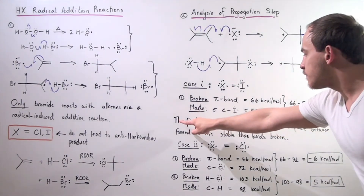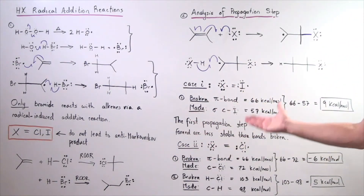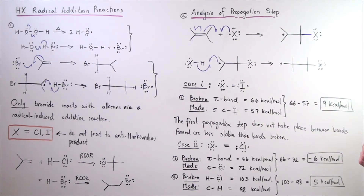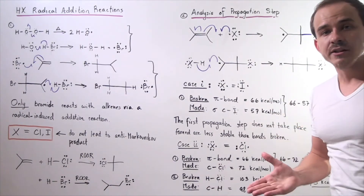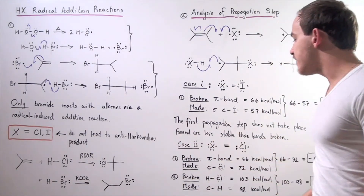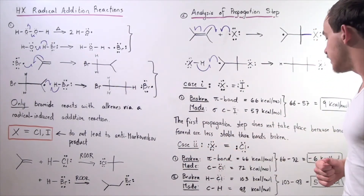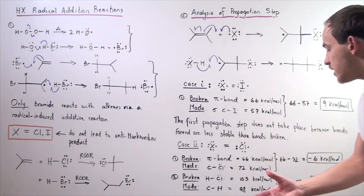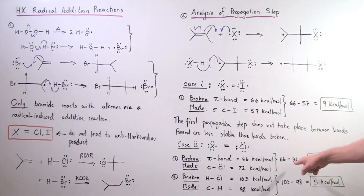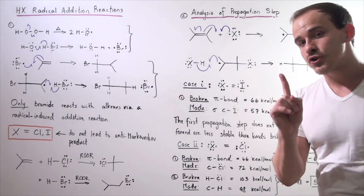In case two, X is chloride. In step one, we again have the pi bond broken at 66 kcal/mol input, and the carbon-chloride bond formed releasing 72 kcal/mol. So 66 minus 72 gives us negative 6 kcal/mol — the first propagation step in case two is exothermic.